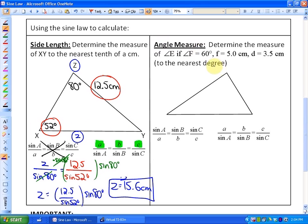Case number two is solving for an angle measure. This says, determine the measure of angle E. If angle F is 60 degrees, side F is 5 centimeters, side D is 3.5 centimeters to the nearest degree. So first of all, let's label this triangle. It uses the letters D, E, and F in its question. So I'm going to assume that the triangle is triangle DEF in this case. And let's label the parts that we know. We know angle F is 60 degrees. We know that side F, which is opposite angle F, is 5.0 centimeters. And we know that side D is 3.5 centimeters.